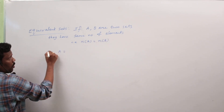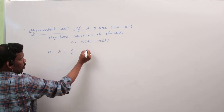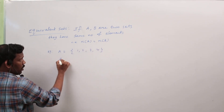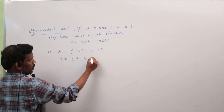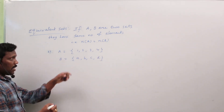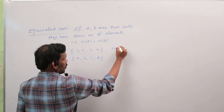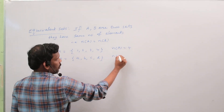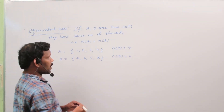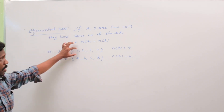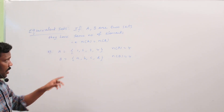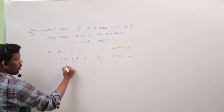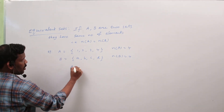For example, A = {1, 2, 3, 4} and B = {a, b, c, d}. In set A, the number of elements is 4. In set B, the number of elements is also 4. But the elements are different — same number of elements, elements are different. So they are said to be equivalent sets.